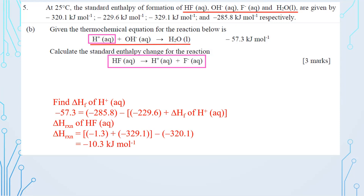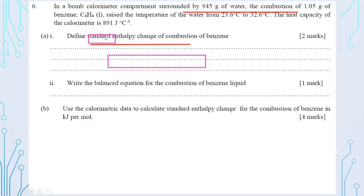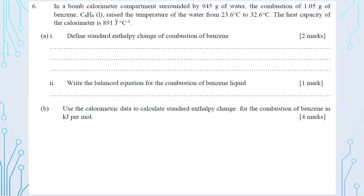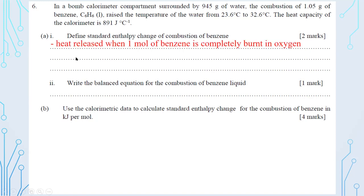That is how to solve question number five. Now question number six: in a bomb calorimeter, the combustion compartment is surrounded by 945 g of water. Combustion of 1.05 g of benzene raises the temperature from 23.6°C to 32.6°C. The heat capacity of the calorimeter is 891 J/°C.